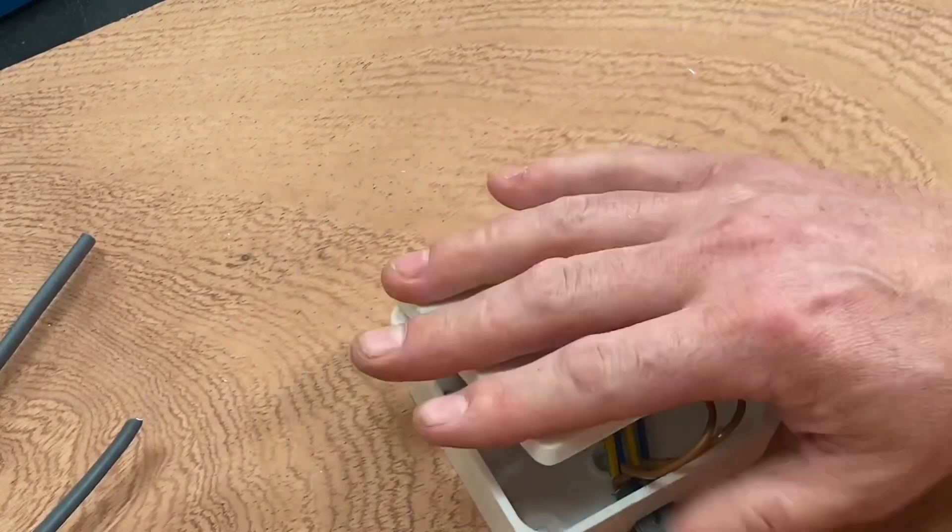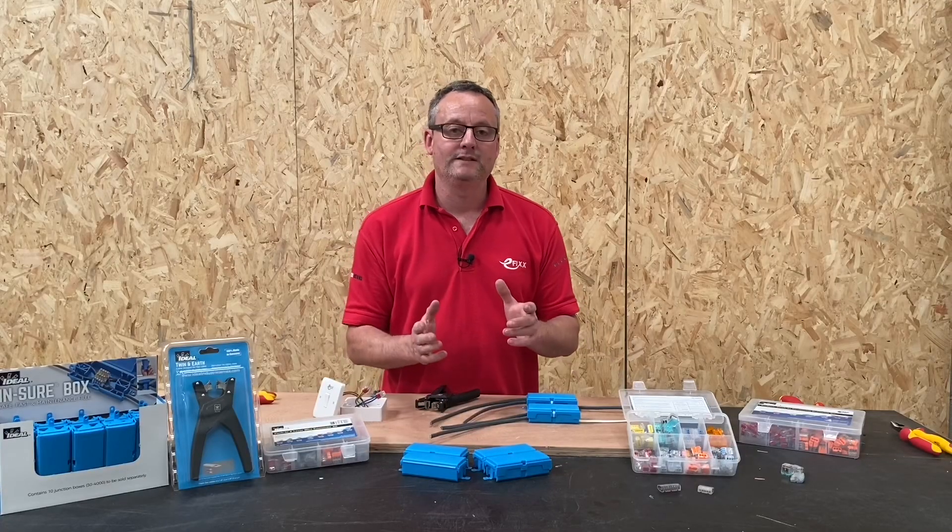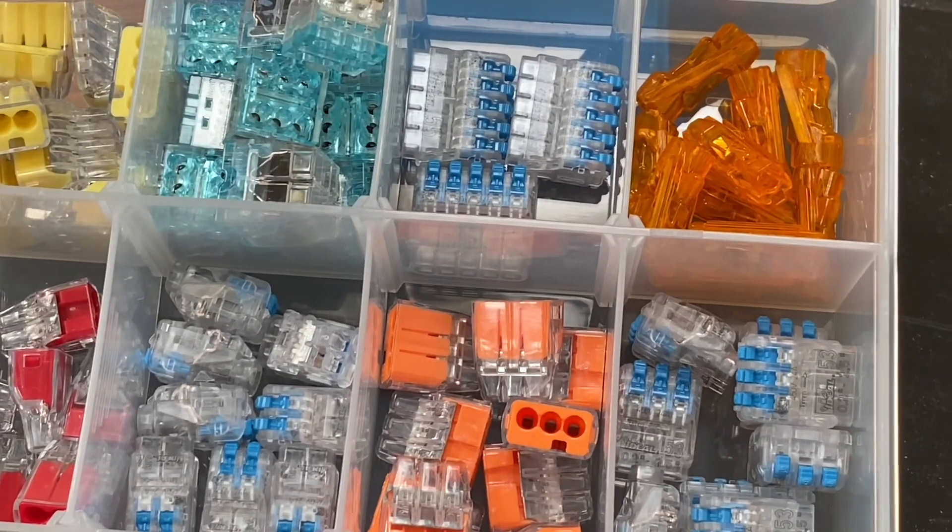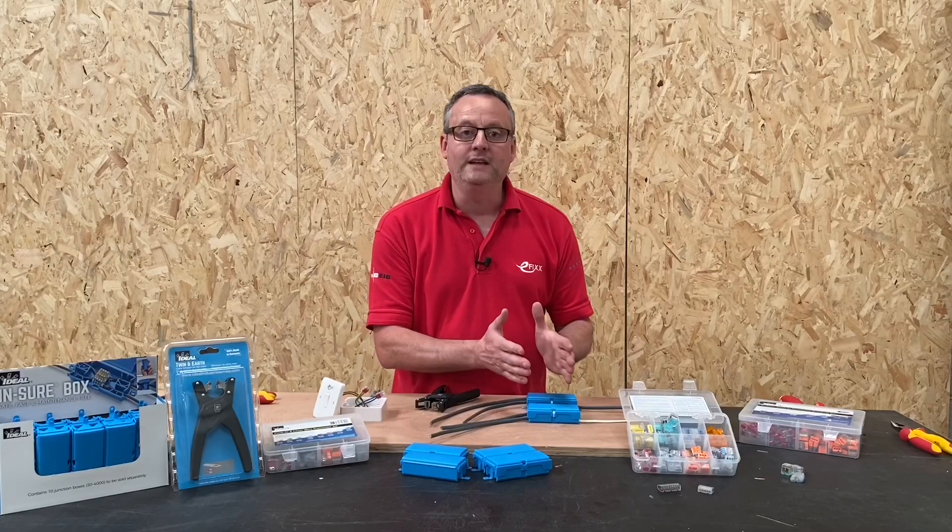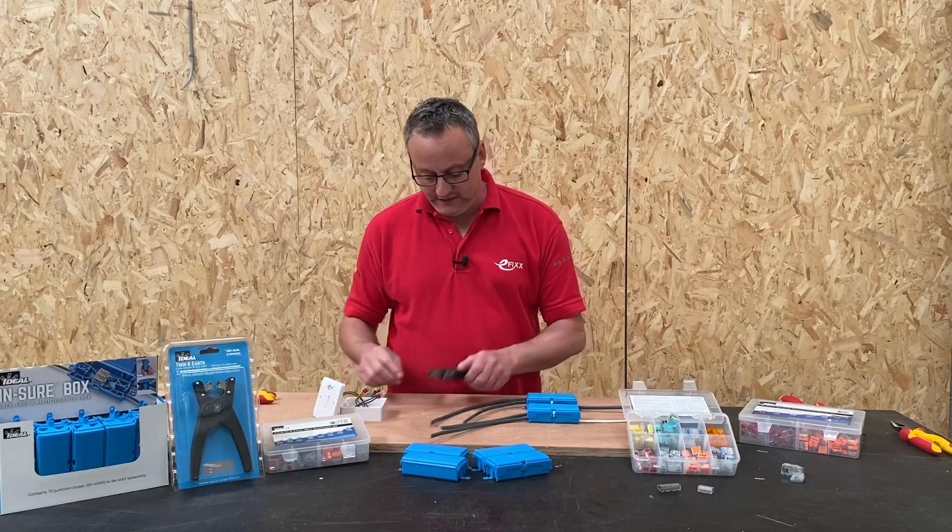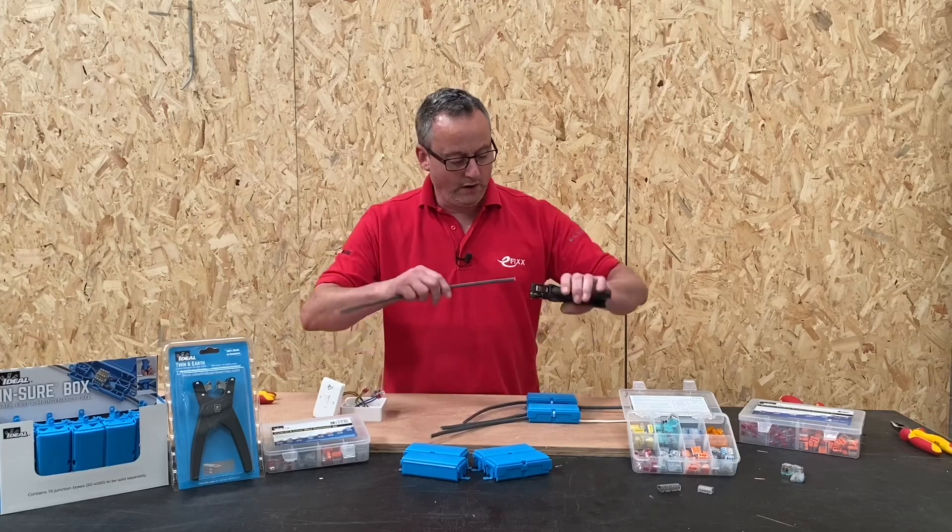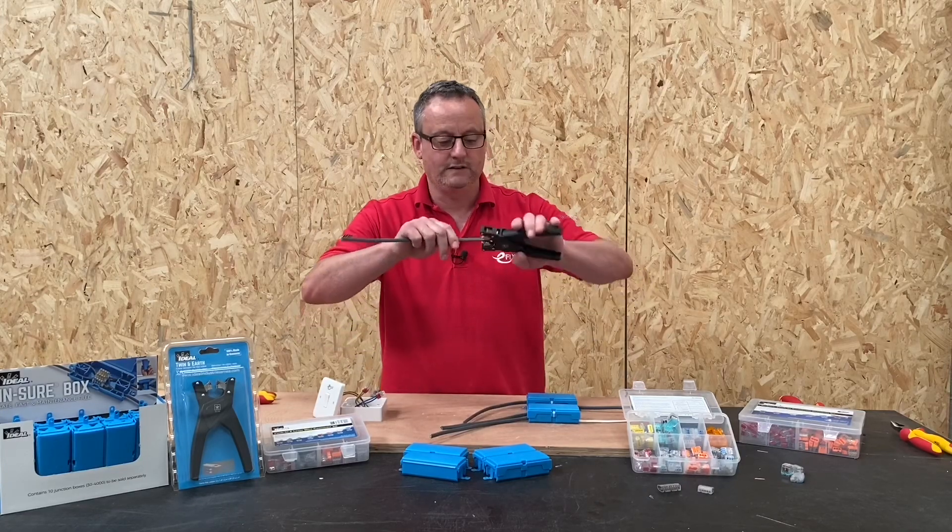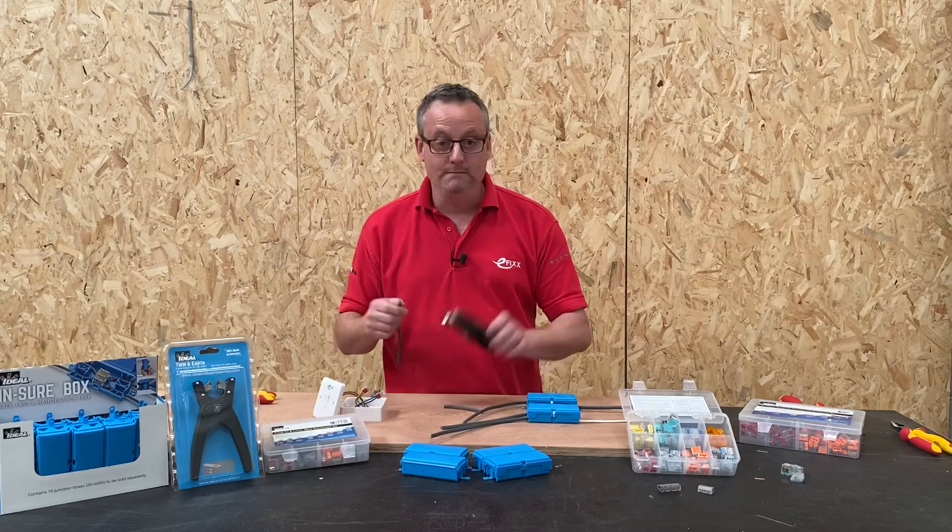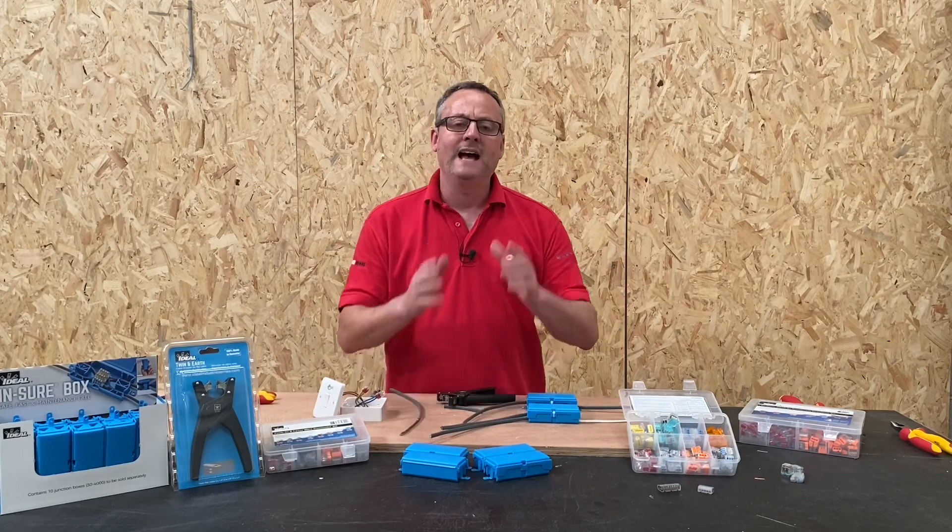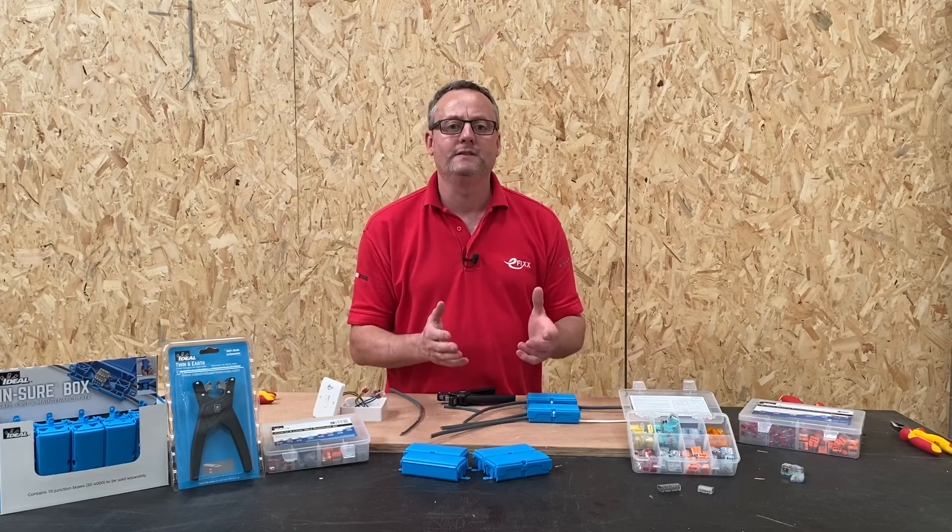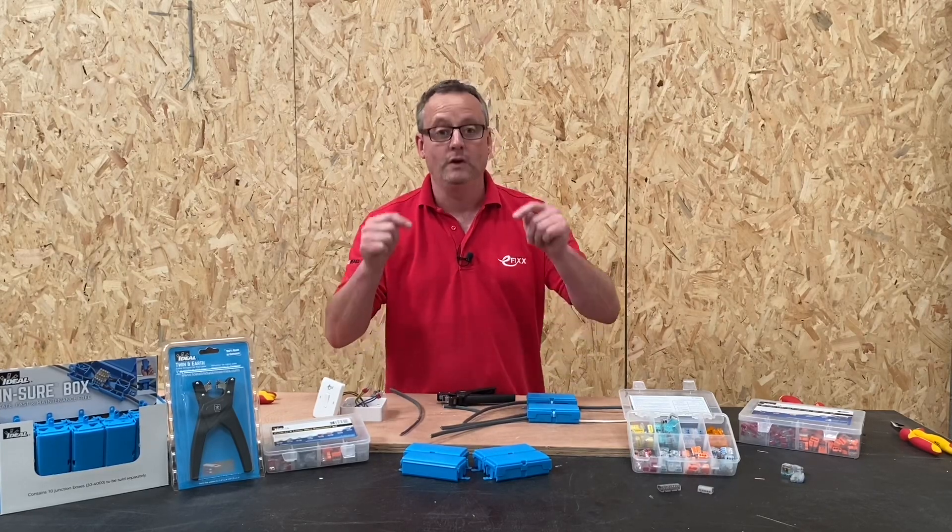So we've seen in this video presentation now Ideal Industries In-Sure connectors have a wide range of applications in the electrical industry. We've seen it in conjunction with the In-Sure box in order to make connections for lighting circuits. You will have seen in the video me using this stripping tool, and I absolutely love this. Watch this—effortless in order to strip twin and earth cables. You'll probably see more of this on the channel in the future. As always, eFIX and Ideal Industries are interested in your comments and your experiences using these products, so please make sure you comment below.